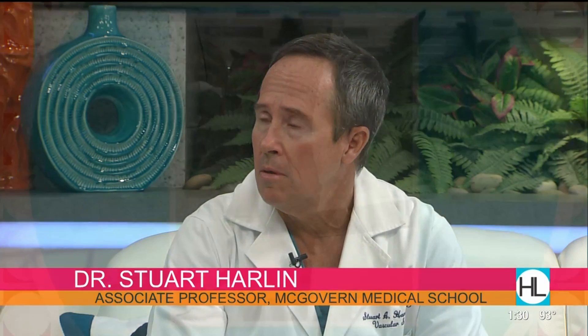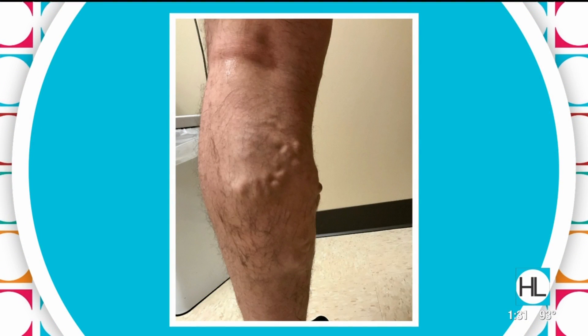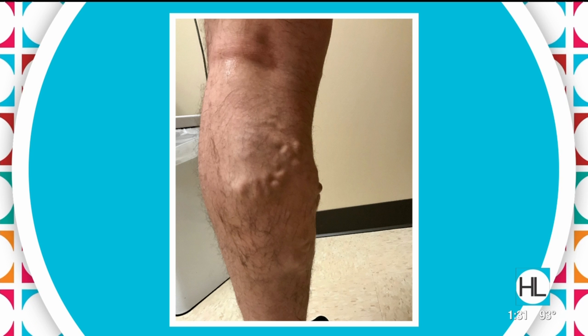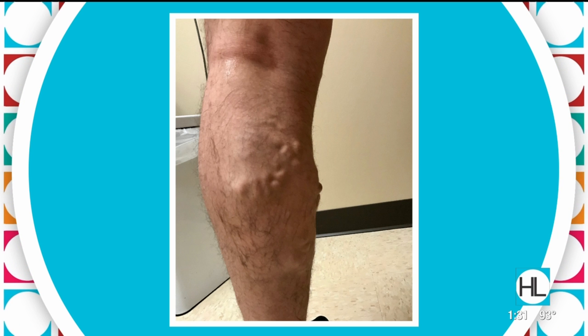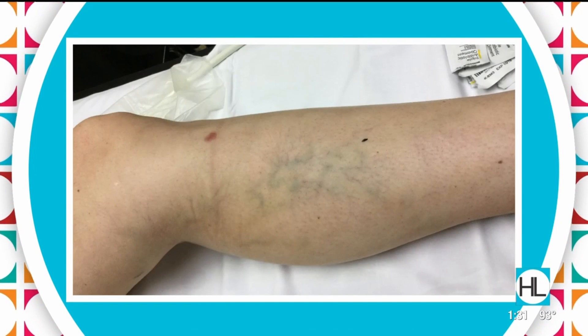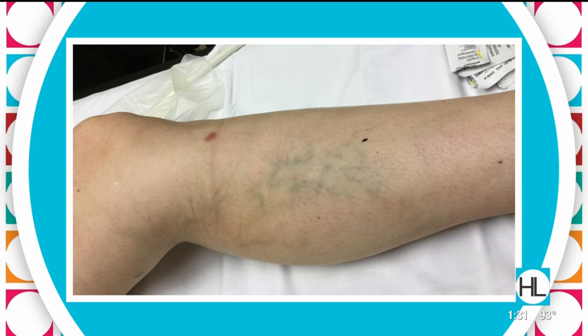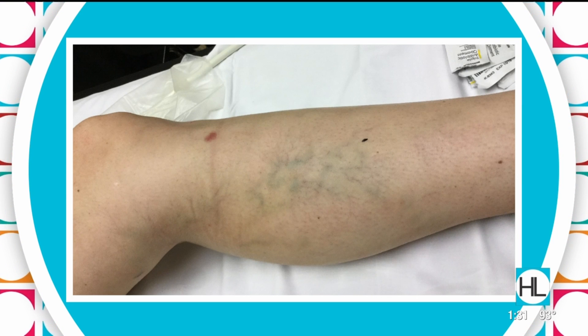Let's talk about what varicose veins actually are, because it sounds like there's a lot of misinformation out there. They're really a spectrum of disease, going from tiny spider veins that have really no clinical significance other than you just don't like the way they look, to great big veins the size of your thumb that can cause real medical problems. This is not just women — it's half the adult population in the United States, and they become more prevalent as you age just from standing up all your life.